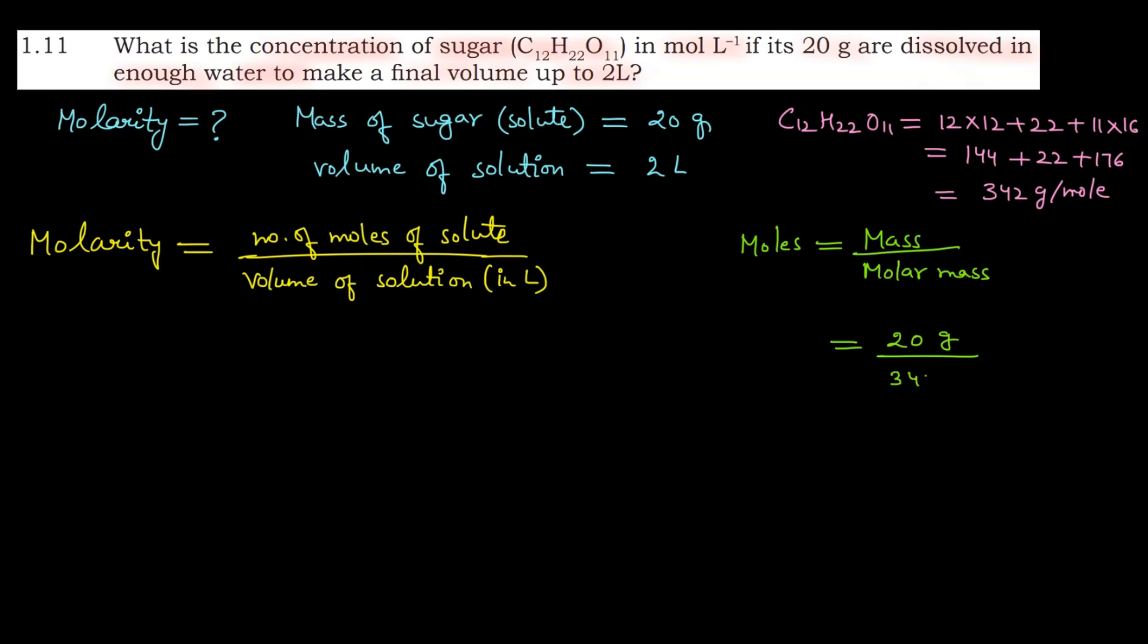This value you have to put. If you want you can calculate the moles separately in decimal points, but we'll put the value directly. So what will this become? Volume of solution is 2. Number of moles is 20 divided by 342. Solve it. 20 divided by 342 into 1 by 2. You can solve like this. Cancel out. 2 tens are 20. So what is this? 10 divided by 342. This will cancel further. Finally after calculating the answer you get is 0.0292 which is approximately equals to 0.03 mole per liter.